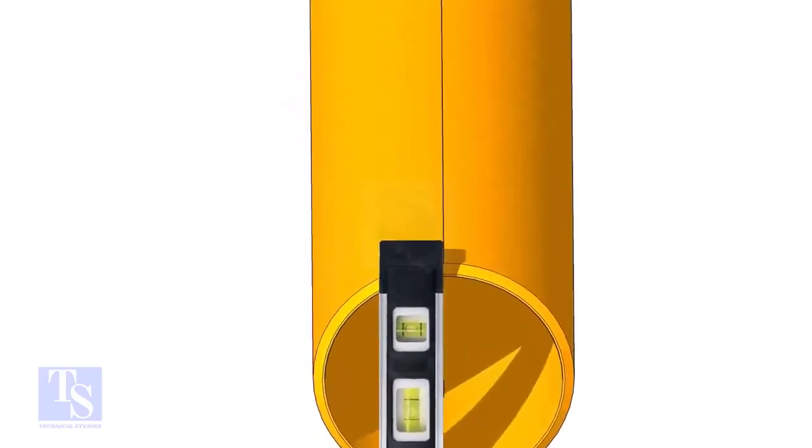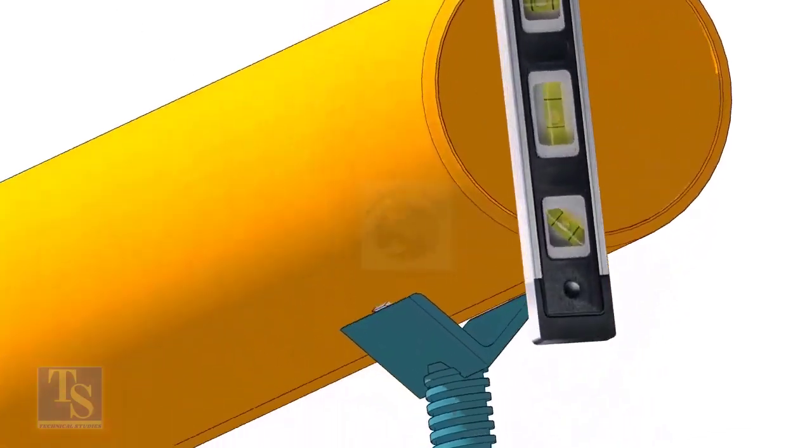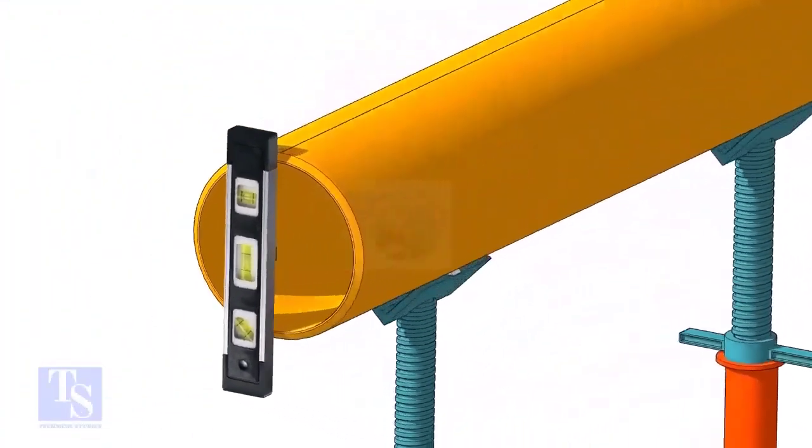Level the pipe horizontally and vertically as shown. After leveling, arrest the pipe to stop it from rotating.